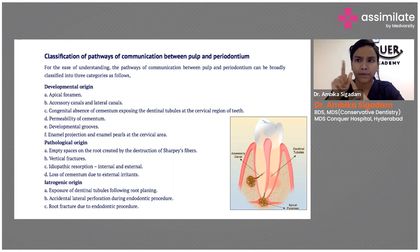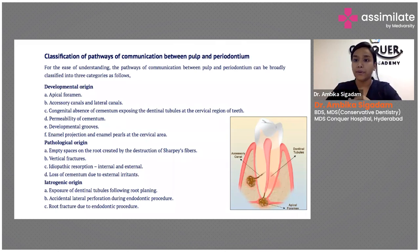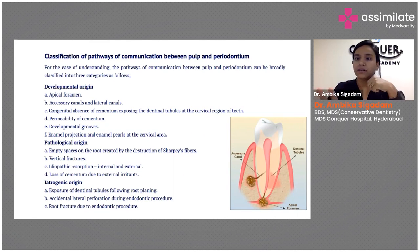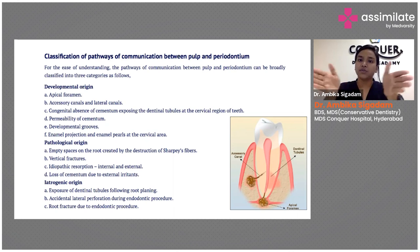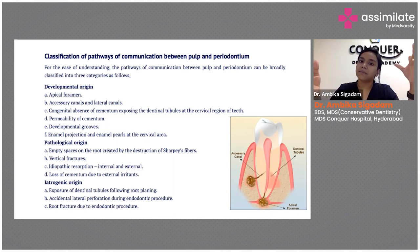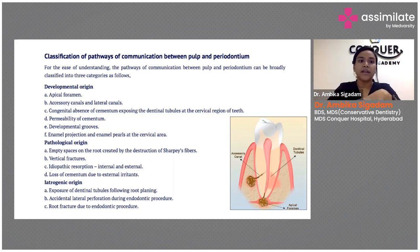Accessory canals and lateral canals can similarly be a pathway between your pulp and the periodontium. Congenital absence of cementum means that dentinal tubules are directly exposed to the periodontium, creating a pathway. Increased permeability of the cementum also creates a pathway.